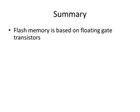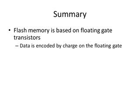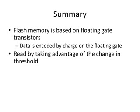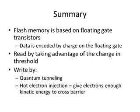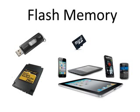In summary, flash memory is based on floating gate transistors, which have a floating gate that can store a charge for a long time. The charges on those floating gates are how you encode data in flash memory. You read by taking advantage of the change in threshold caused by the charge on the floating gate. There are two different ways to write: you can either use quantum tunneling, or you can use hot electron injection, where you give the electrons enough kinetic energy to cross the barrier. That's my presentation on how flash memory works — I hope you found it informative.